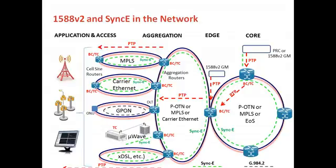Looking at a representation of a network, the idea of the Precision Timing Protocol is to give the network the ability to transport timing information from the core of a network or the edge of a network right through to multiple points at the edge or access of the network. Precision Timing Protocol takes timing from a grand master — a 1588 version 2 grand master — and distributes it as timestamped packets across a network.